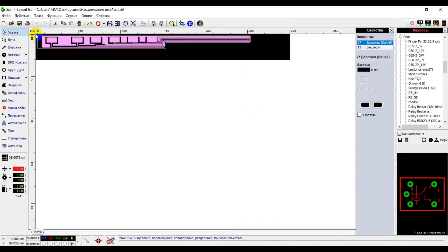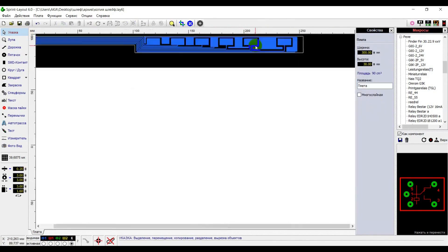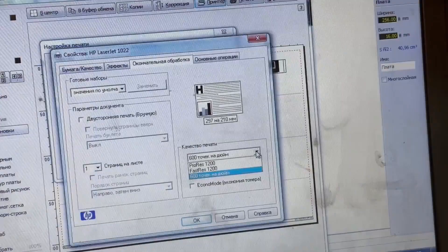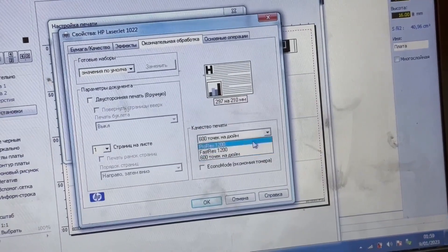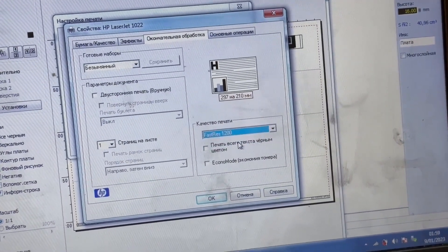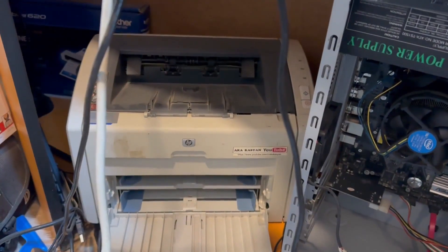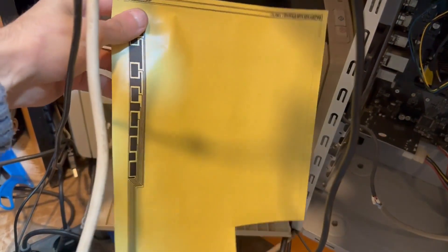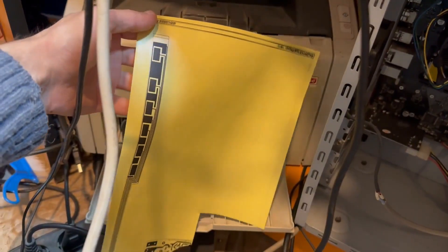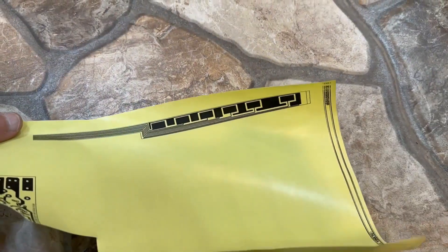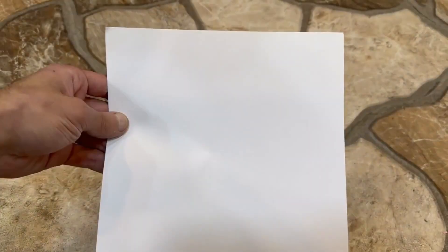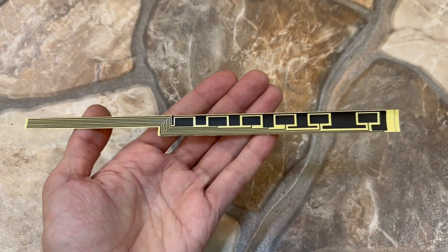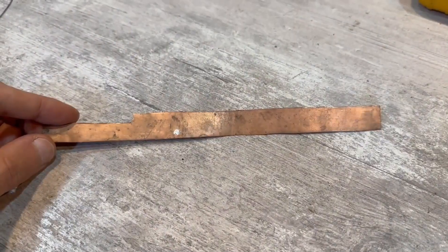The next step is to print the file. For this, a laser printer is used. Set the highest possible print resolution, turn off toner saving, and it's preferable to use a new original cartridge. I will be printing on thermal transfer paper. You can also use photo paper or pages from a glossy magazine. There was a time when I printed on regular A4 paper. Then, cut everything to the size of the ribbon cable, the same applies to the textolite.